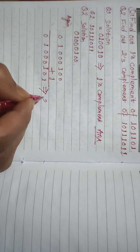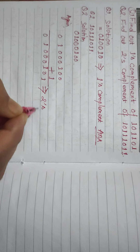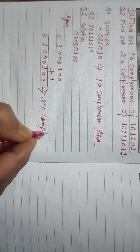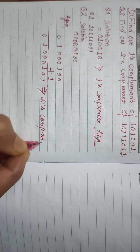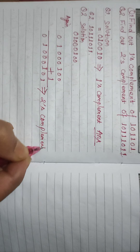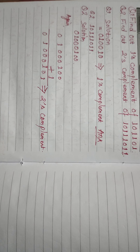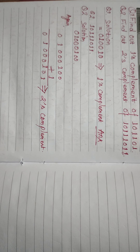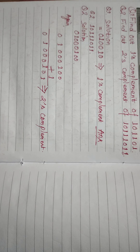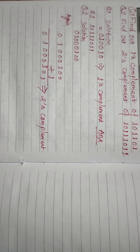And this is your two's complement. I hope you understood how to find one's complement and two's complement of a binary number. If you have any confusion you can comment below, and if you are new to this YouTube channel don't forget to subscribe. Thank you very much.